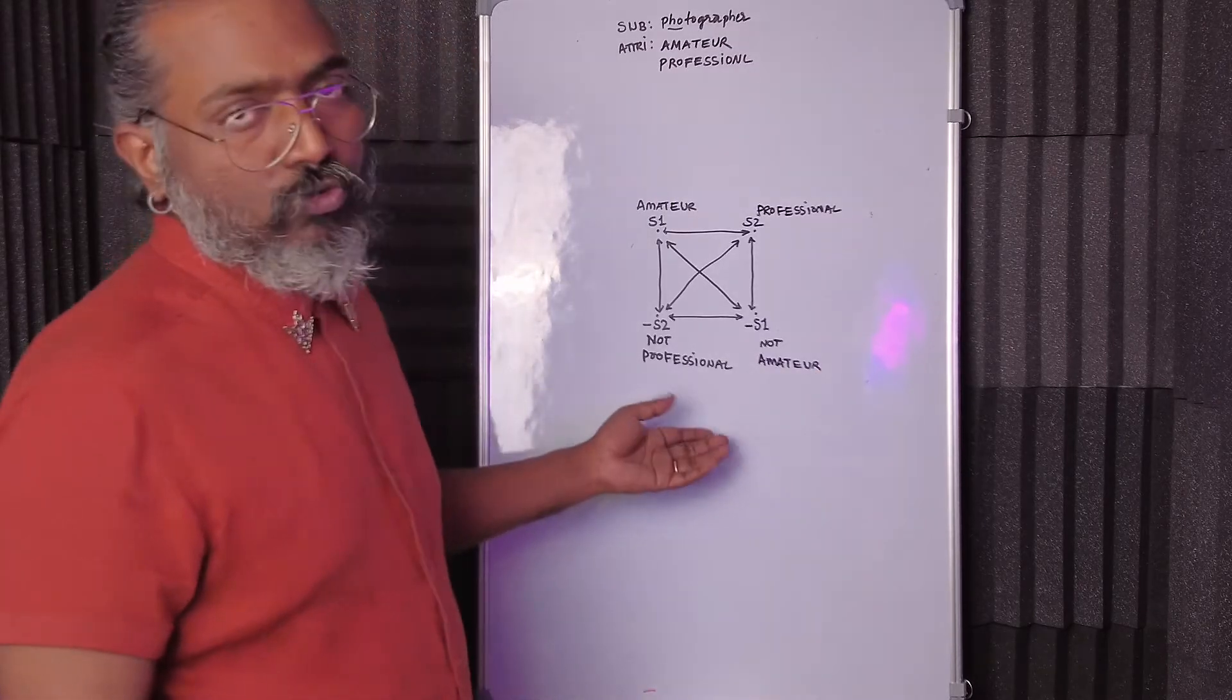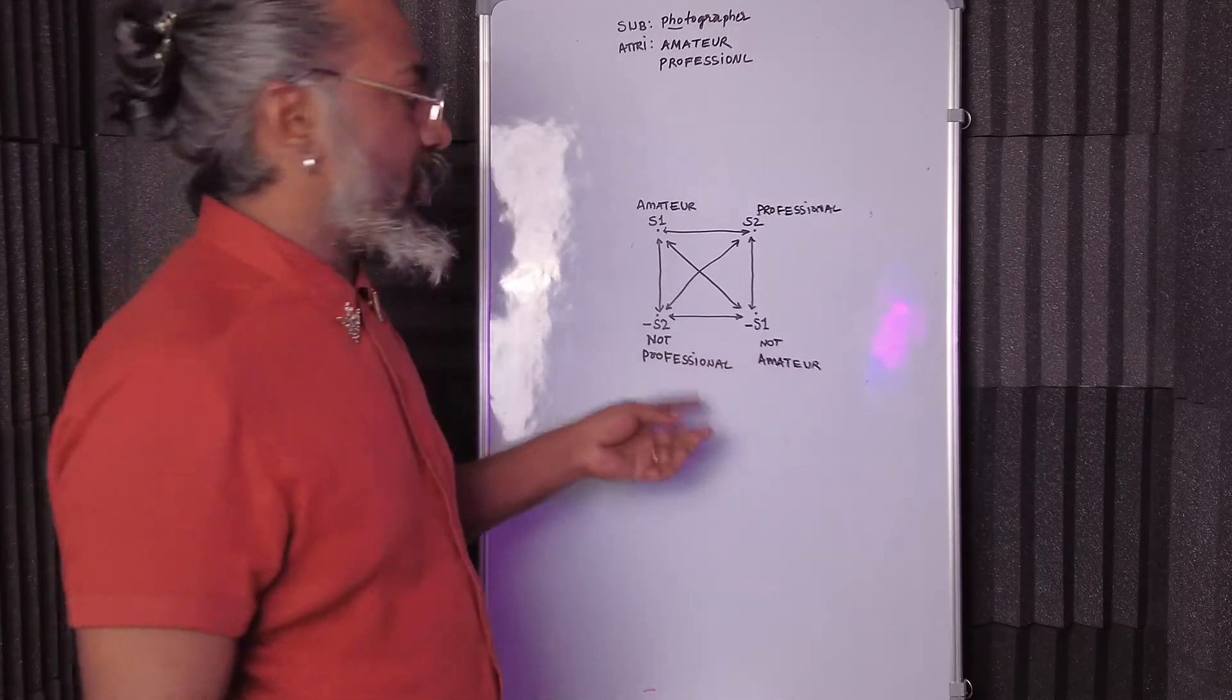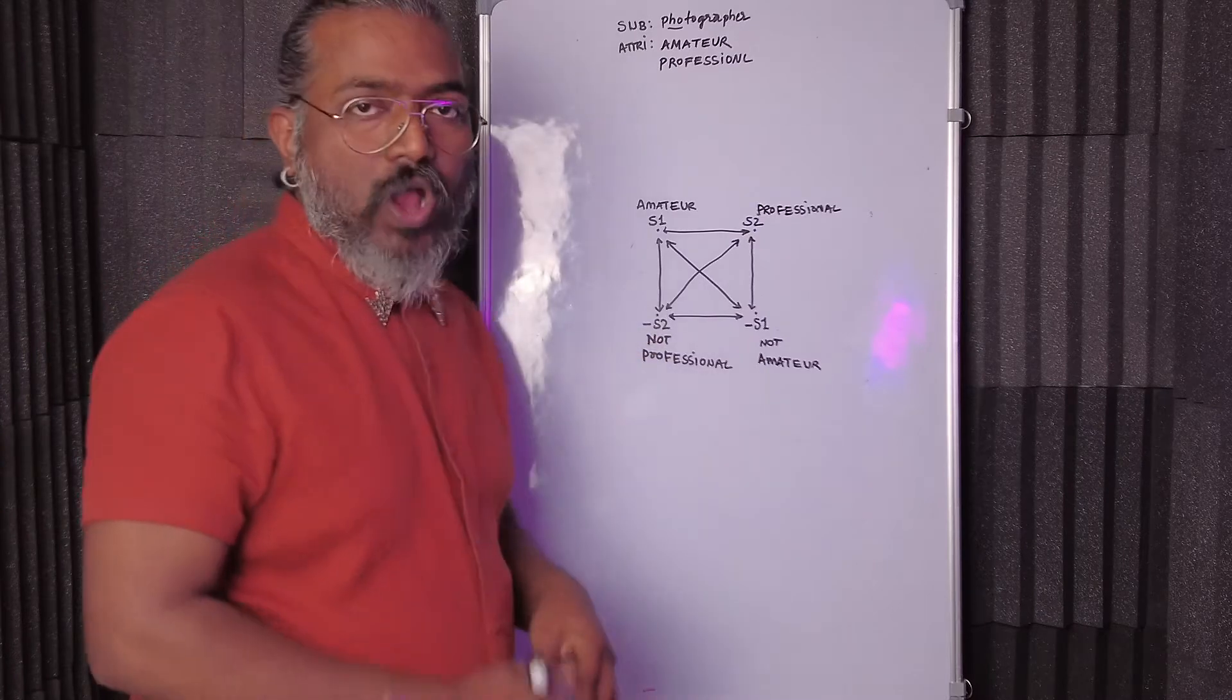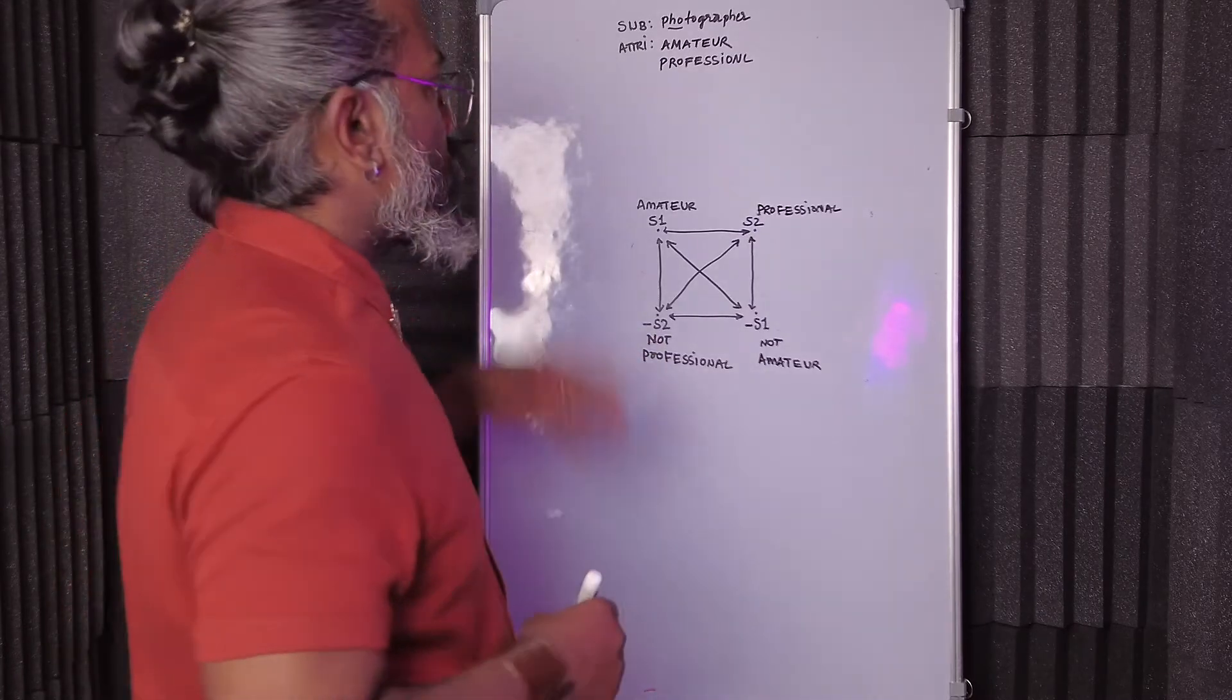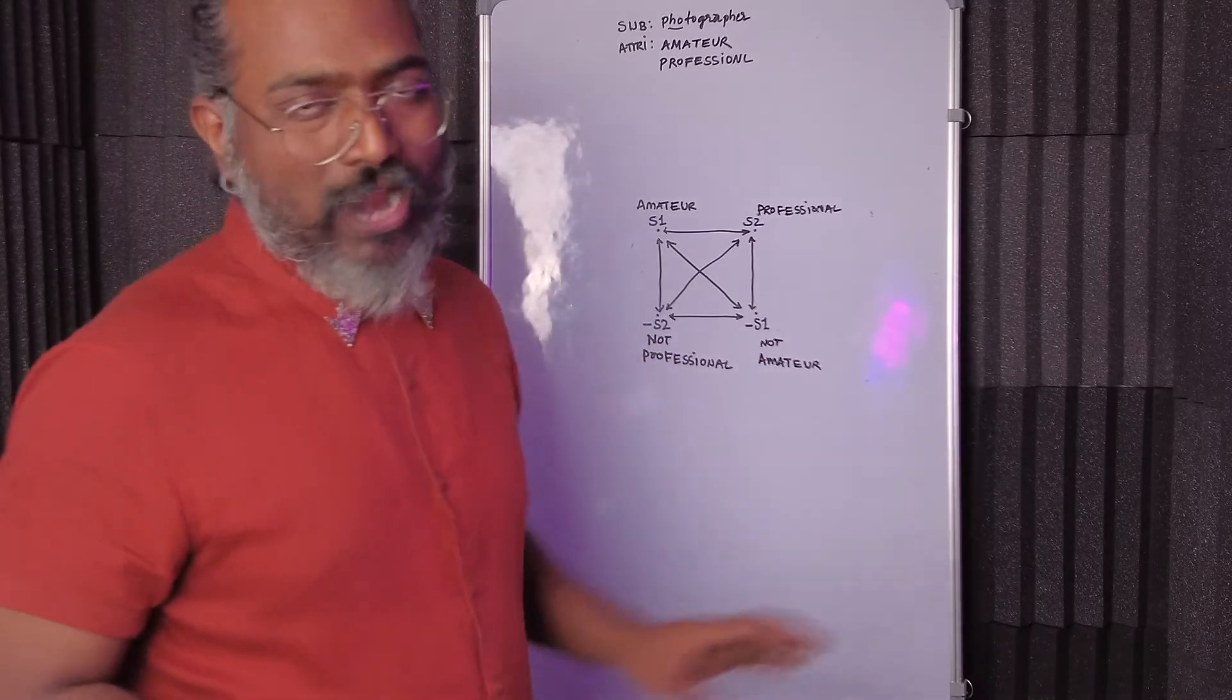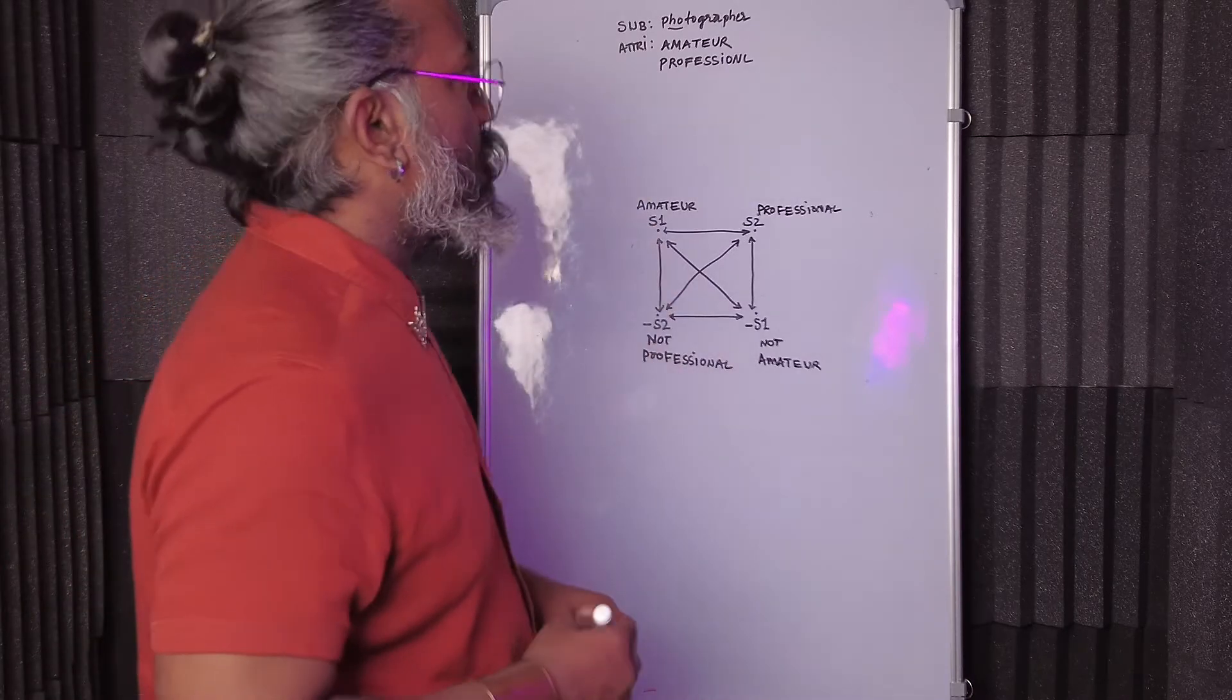Now we've filled in all the attribute data on the semiotic square. Now we're going to go ahead and try to map the subject photographer.